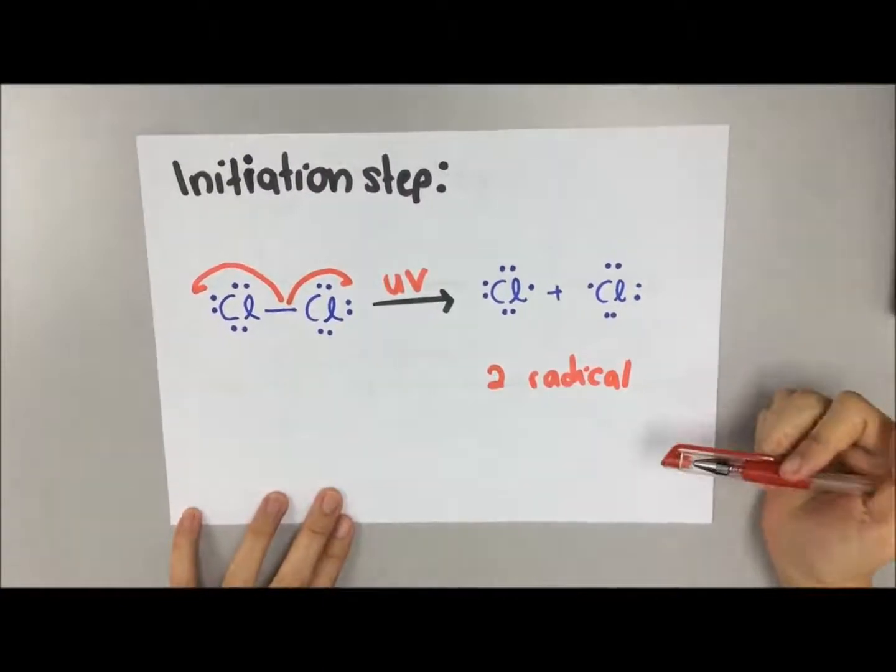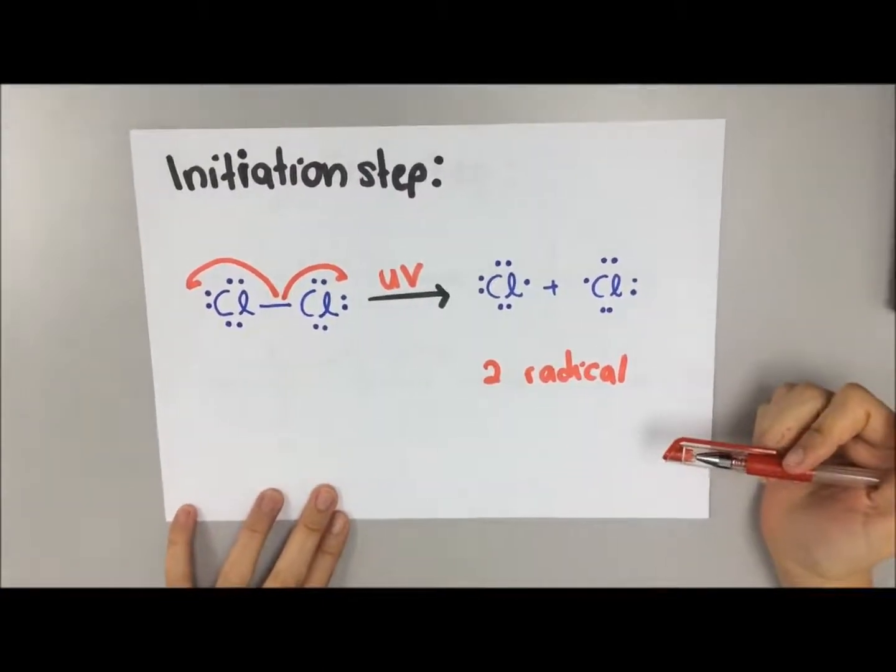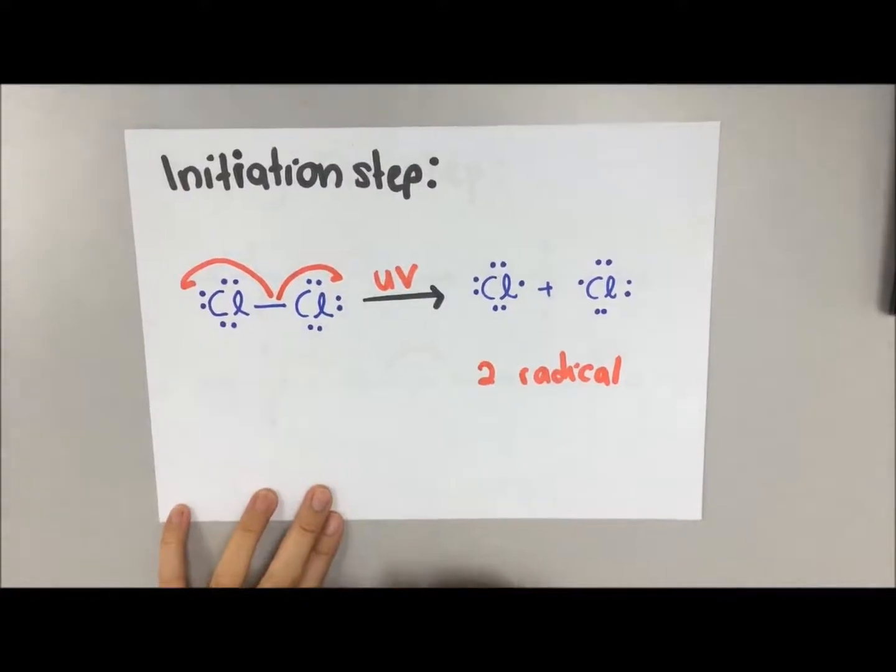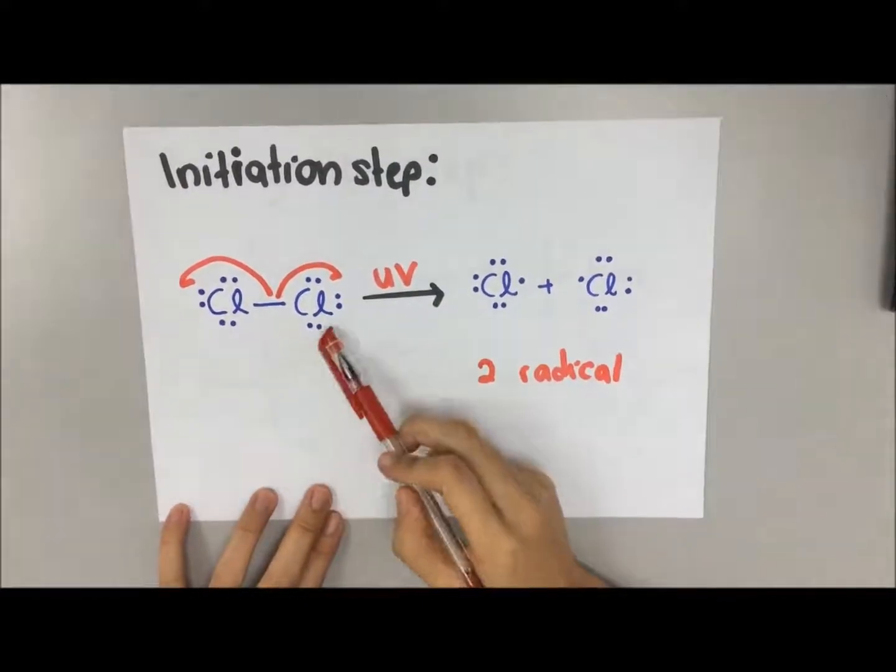The products we will form are one chloroethane and hydrogen chloride. The three main important steps involved are initiation step, propagation step, and termination step.